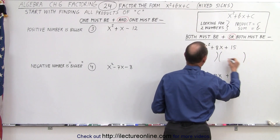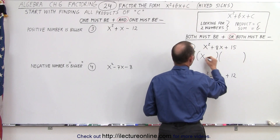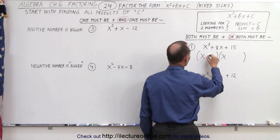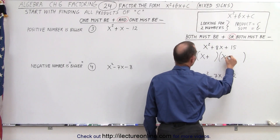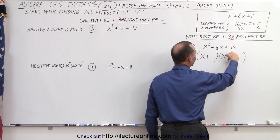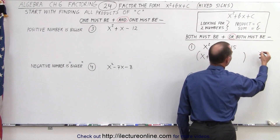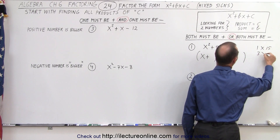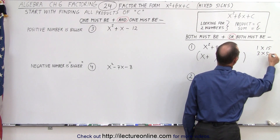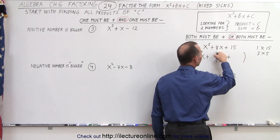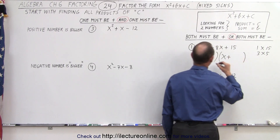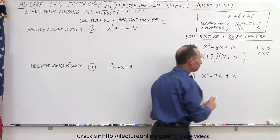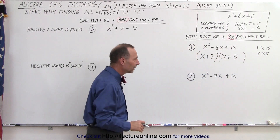We use the same technique again. We write x and x. We decided both are positive, which means we can put two plus signs in. Now to get 15, the only way to get there is to multiply 1 times 15 or 3 times 5. When we add them together, we should get 8, so the only possibility is 3 and 5. That was the easy one.